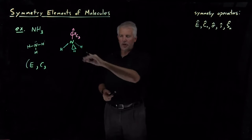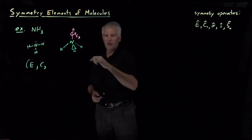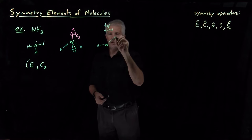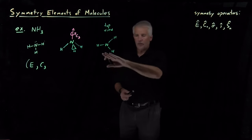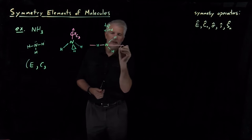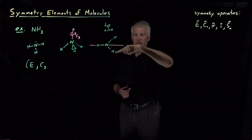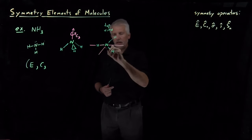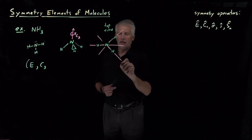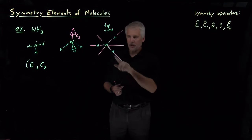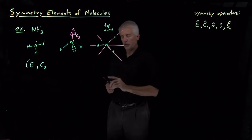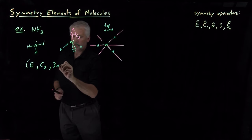If I imagine looking down upon this trigonal pyramidal molecule from the top — a top view — I can see that I can bisect the molecule along a plane. If I reflect the molecule in that plane, this H becomes that H and vice versa. There's also a symmetrically equivalent plane in which this H reflects onto that one, and another mirror plane in which this H reflects onto that one. Because there are three identical H's, there are three mirror planes going through the N and through each H.